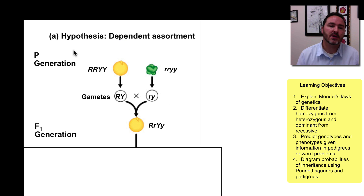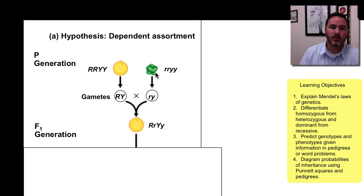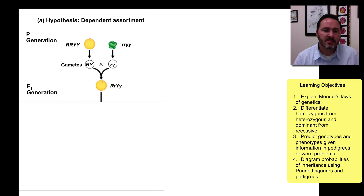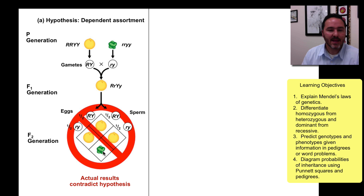Mendel took this further and started to look at two characteristics at a time. Here we're looking at round or wrinkled — round is dominant to wrinkled — and yellow or green — yellow is dominant to green. A true breeding round yellow crossed with a true breeding wrinkled green gives a round yellow F1, with genotype big R, little R, big Y, little Y. Sometimes people think that would just give another three to one ratio with three round yellows for every one wrinkled green, but that's not actually correct.